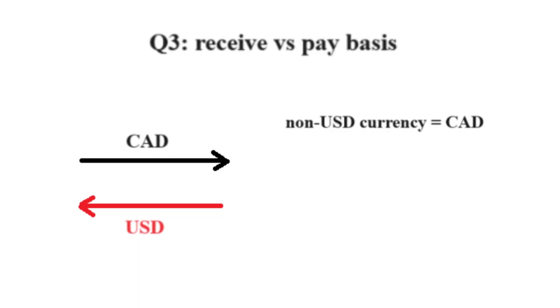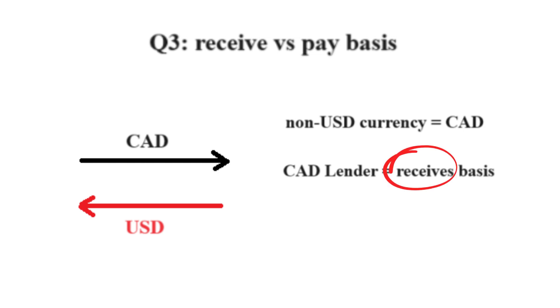Question 3: How to determine who pays or receives the basis? This is always done from the perspective of the currency that is not USD. In our case, the non-USD currency in the swap is CAD. Furthermore, from the trader's perspective, he is the lender of the Canadian dollar and the receiver of the Canadian dollar interest. So he receives the basis.